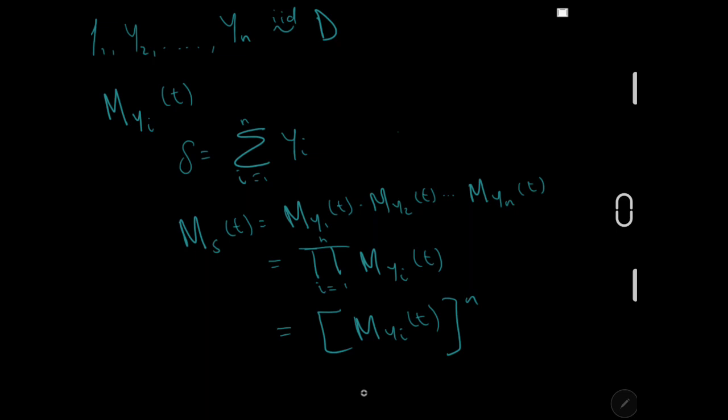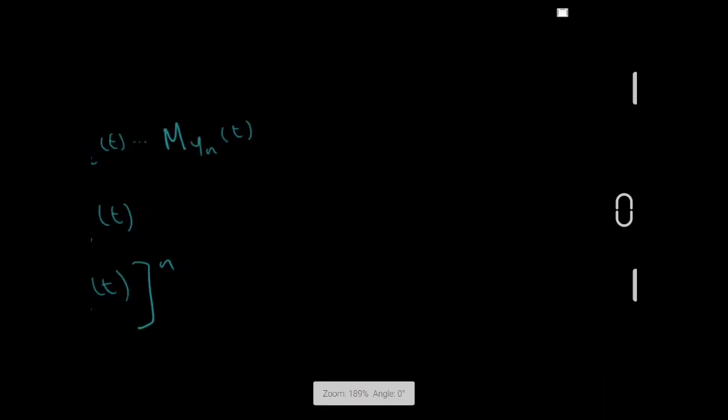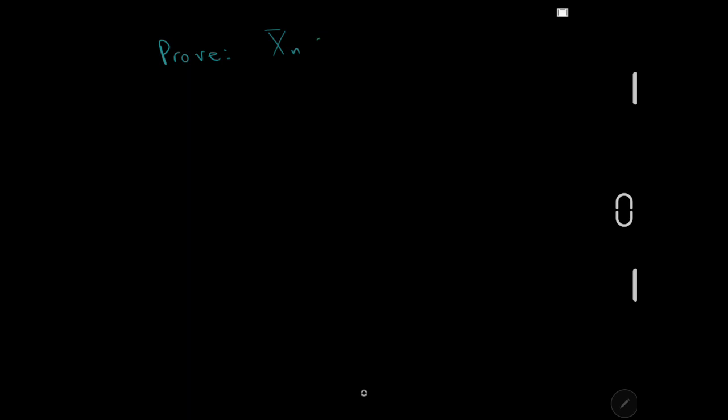Those are the two main prerequisites you need to understand this proof, and you also need to know the moment generating function of a normal distribution. Now let's get on to the actual proof. We need to prove that x-n-bar is normally distributed with mean mu and variance sigma squared over n.